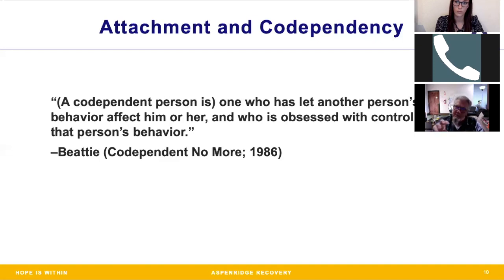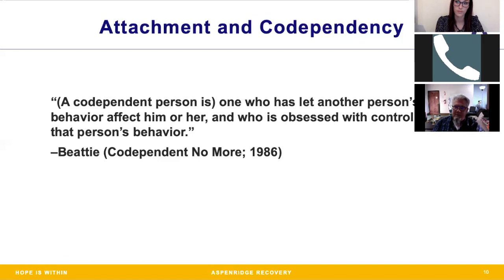If you think about an adult child of an alcoholic who grows up learning to control their environment, their siblings, and their parents, they come into adulthood and they tend to try to find somebody that needs help. Something I say a lot is: people who need to help find people who need to be helped. That's why people with codependent tendencies typically find people who have problems and need help, and people who need help in turn look for people who want to help. It's like a match made in heaven, so to speak.